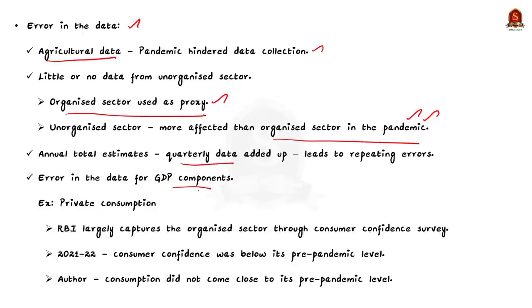The fourth reason is error in the data of GDP components — final consumption, fixed assets, exports, etc. For private consumption, the RBI's consumer confidence survey largely captures the organized sector, and throughout 2021-22 consumer confidence was way below pre-pandemic levels. Additionally, unorganized sector data is not included. So the author argues consumption could not have come close to its pre-pandemic level, and this applies to all other GDP components as well. All of these together caused error in the data.